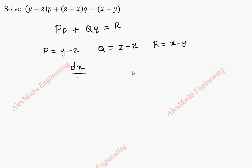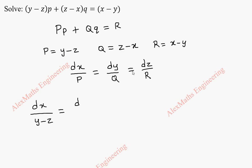To get the solution, we have to solve dx by capital P equal to dy by capital Q equal to dz by capital R. Now, let's substitute: dx by y minus z, dy by z minus x, and dz by x minus y.